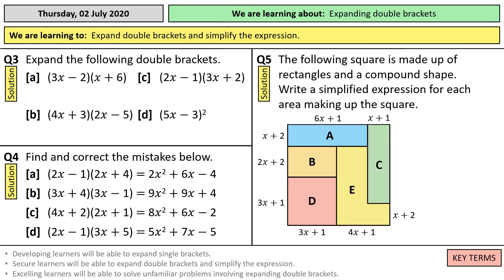Next three questions: in question three, you'll have a chance to practice the examples we just did. In question four, I just want you to spot the mistakes — there's a mistake in each one. And question five: the following square is made up of rectangles and a compound shape — write a simplified expression for each area making up the square. Pause the video and have a go at those.